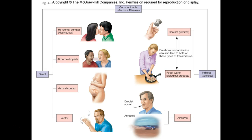Communicable diseases can be contracted indirectly by touching contaminated objects, or ingesting contaminated food or water, or through biological products. Body fluids that may contain infectious microorganisms include feces, blood, saliva, urine — usually sterile unless there's an infection — and vomit. Mucus is another — people spitting on the ground is a real transmission concern, since we don't know what's in that.